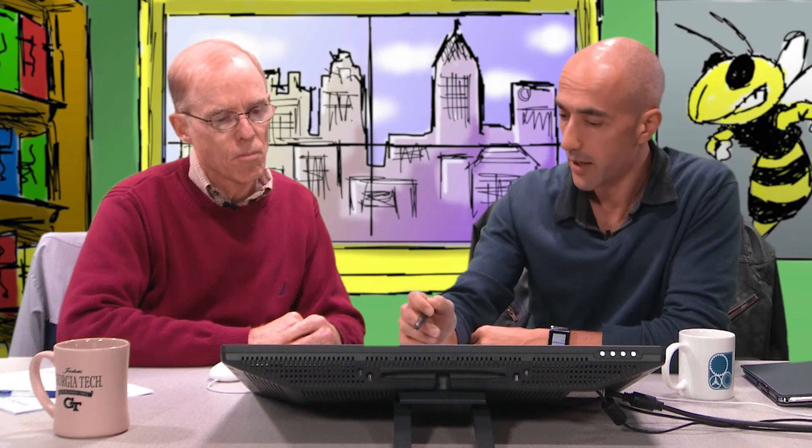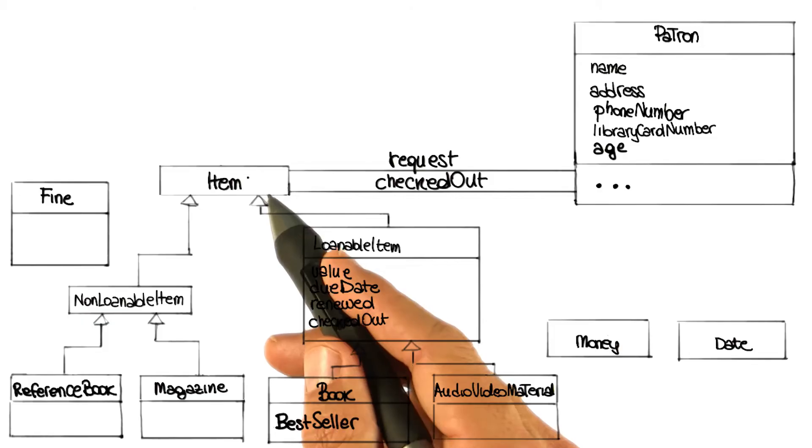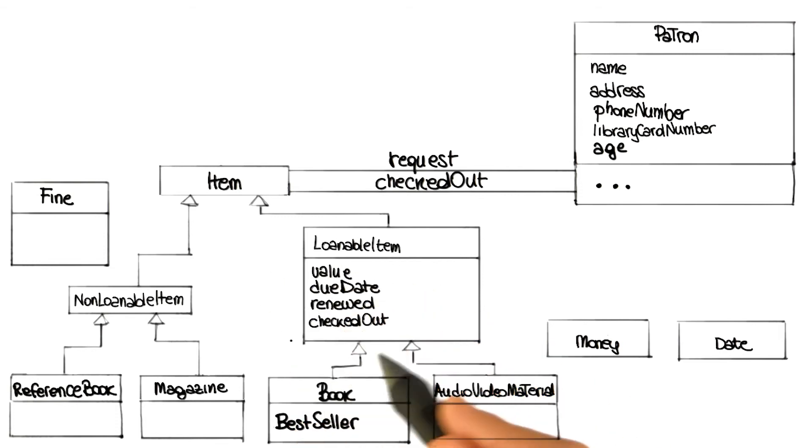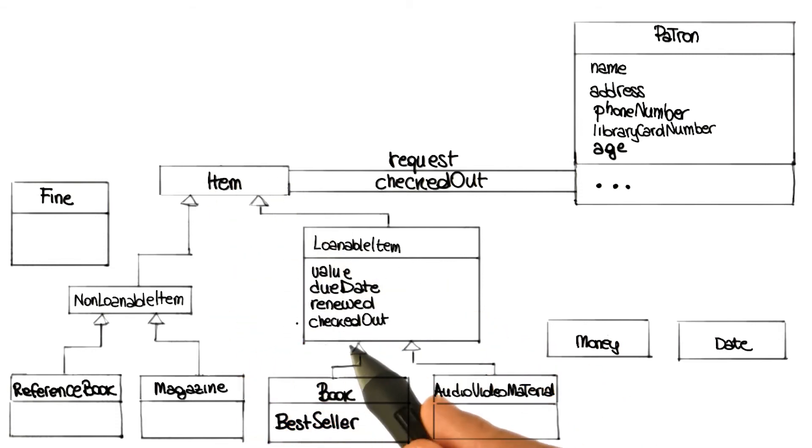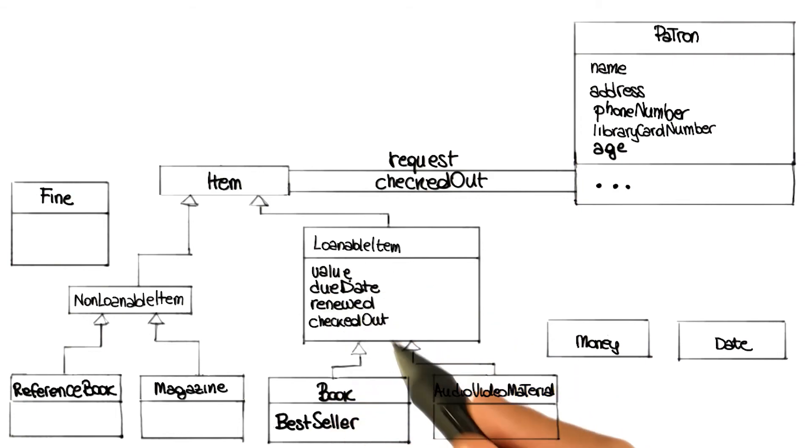If we look at this diagram now, it is pretty clear what is loanable and what is not — it's a much cleaner design. And I see you've gotten rid of the loanable attribute too. I did, because at this point it's already represented by having these two classes. Also, I moved all these attributes — value, due date, renewed, and checked out — that make sense only for loanable item, from item down to loanable item. This tells us that these characteristics are only meaningful for the loanable item.